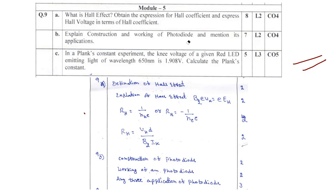Question 9b: Explain the construction and working of a photodiode and mention its applications. It carries a weightage of seven marks. You need to cover: the construction of the photodiode with a symbol, the working of the photodiode with a relevant diagram, and any three applications of the photodiode.